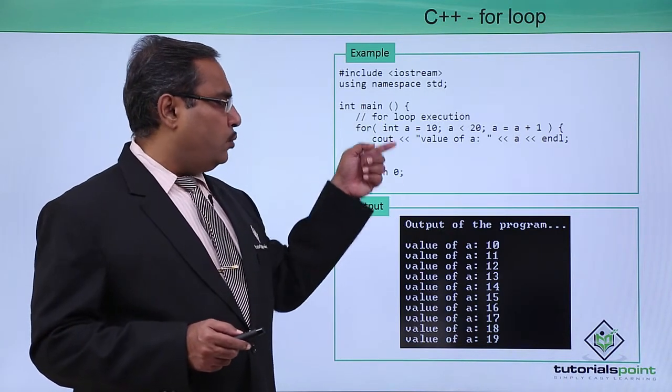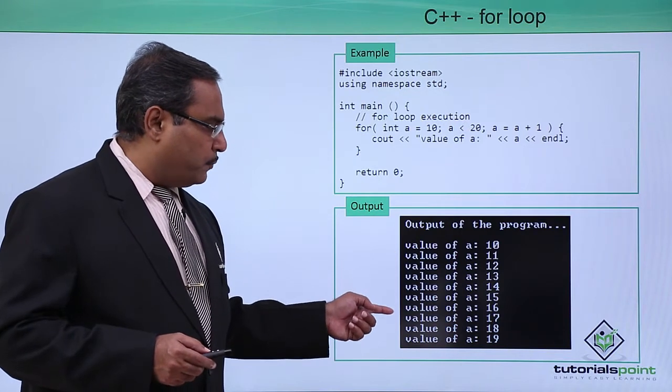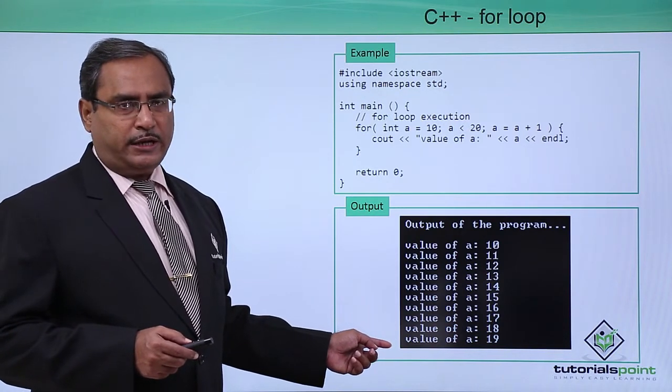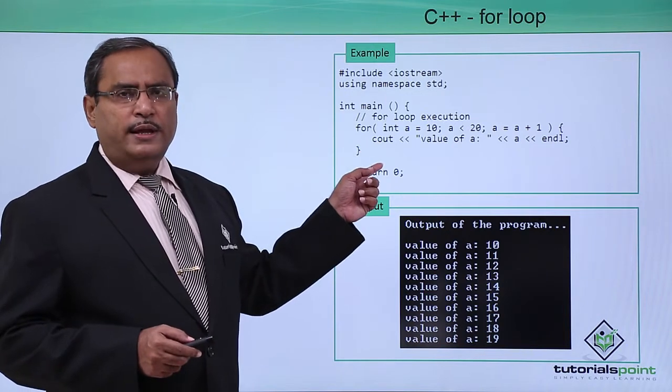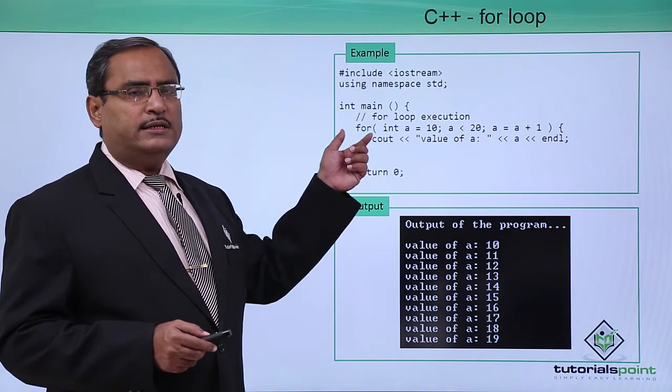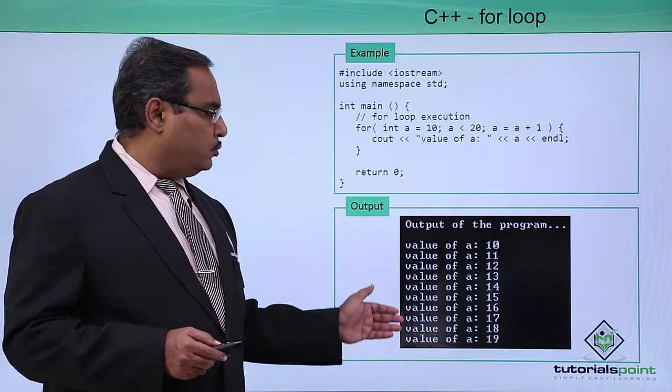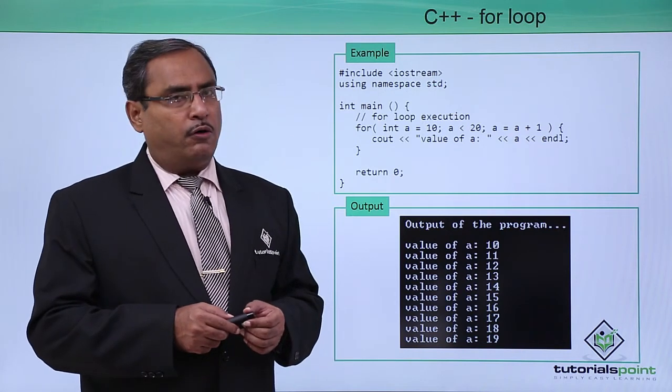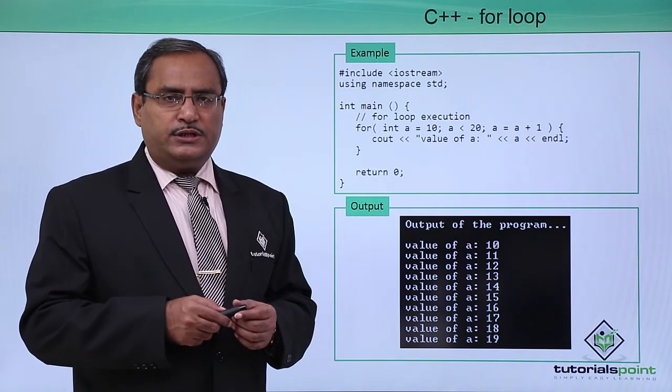If we execute this code, this is the respective output which was expected. In this way we have shown you how to implement a for loop within C++ coding and how to get the required output. Thanks for watching this video.